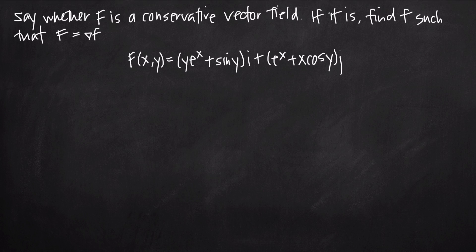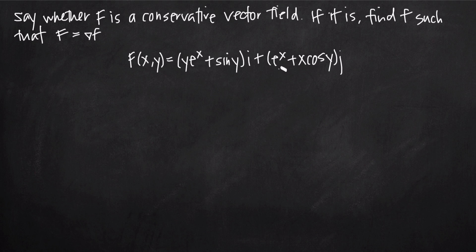In this video, we're going to be talking about conservative vector fields. In this particular problem, we've been asked to determine whether or not F (capital F) is a conservative vector field, and if it is, to find some function lowercase f such that F is equal to the gradient of f. The vector field we've been given is capital F of xy equals y e to the x plus sine y times i, plus e to the x plus x cosine y times j.